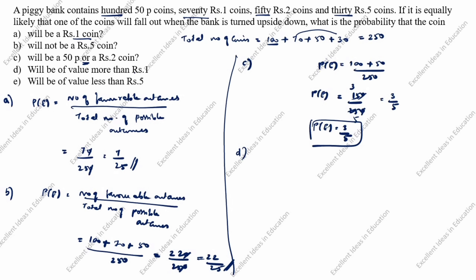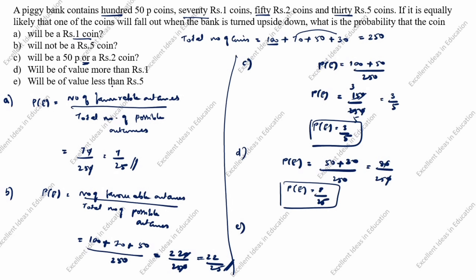Part D: will be of value more than rupee 1. More than rupee 1 means we look at rupee 2 and rupee 5 only — 50 paise is less than rupee 1, so we skip it. P(E) equals rupee 2 is 50 plus rupee 5 is 30, divided by 250. That is 80 by 250 — cancel the zeros — P(E) equals 8 by 25.